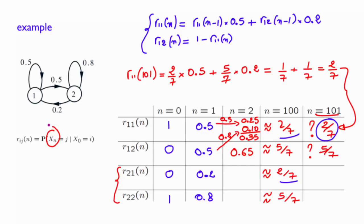By the way, the steady state of being in state 2 is greater than the steady state of being in state 1. Does it make sense? Yes, state 2 is a little bit more sticky than state 1 in the following sense. When you get to state 2, the probability that you remain in state 2, which is 0.8, is greater than the corresponding probability for state 1, which is 0.5.